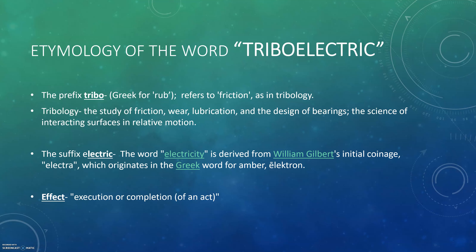And then we have the suffix 'electric.' We all know what electric means, and in class we talked a bit about how amber was kind of the first material studied that led to the discovery of the electron. And finally, 'effect' is the execution or completion of an act. So put it all together, the triboelectric effect is the execution or completion of this rubbing using electricity.